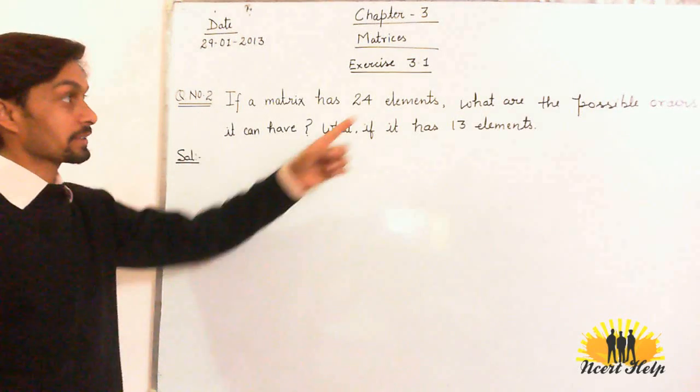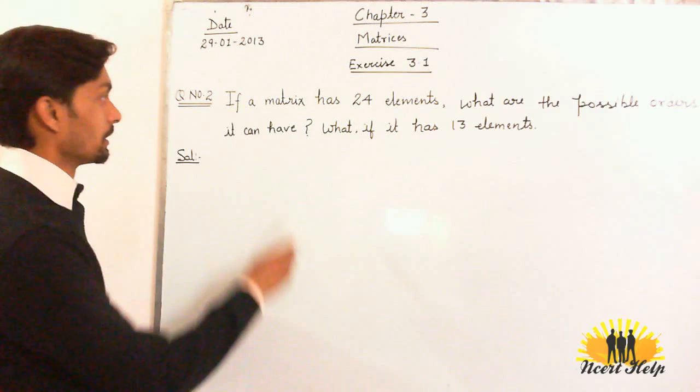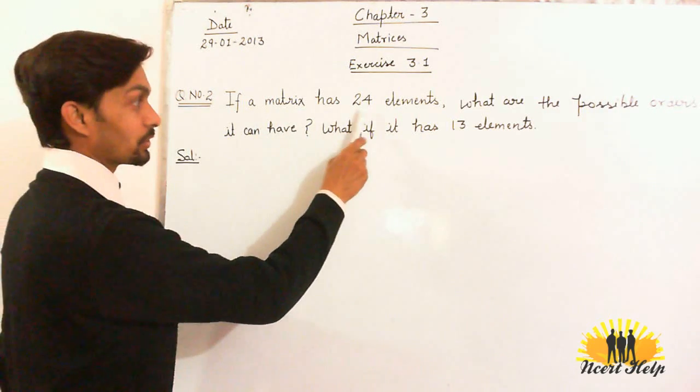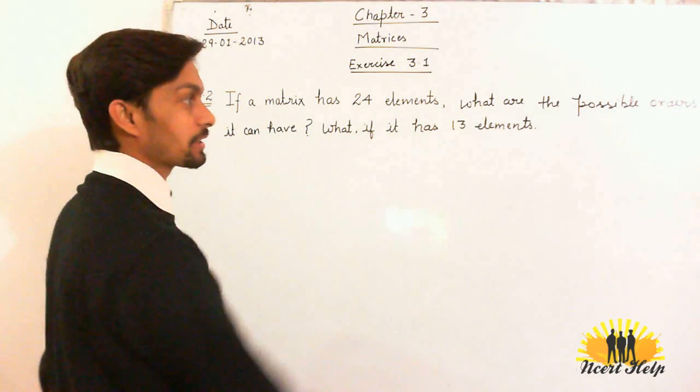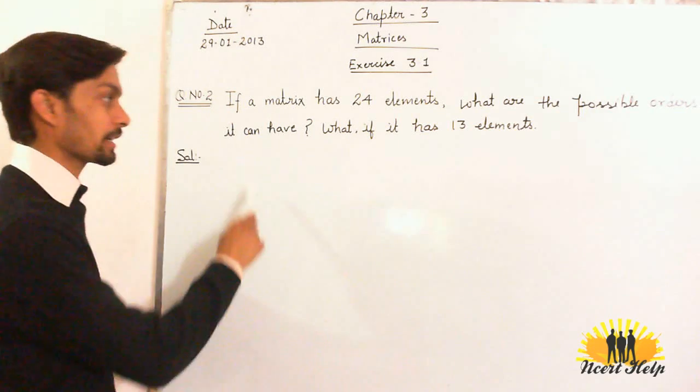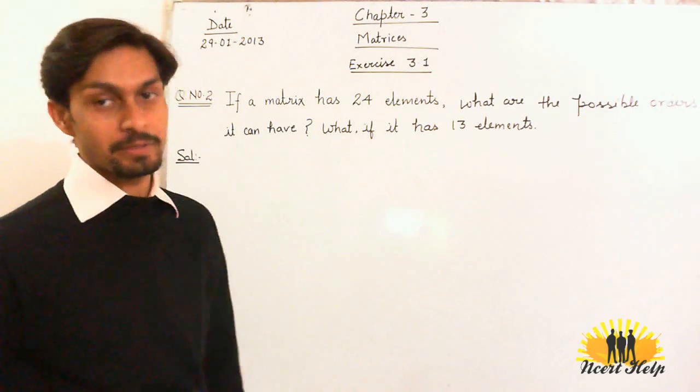Question number 2 of exercise 3.1: If a matrix has 24 elements, what are the possible orders it can have? And what if it has 13 elements?